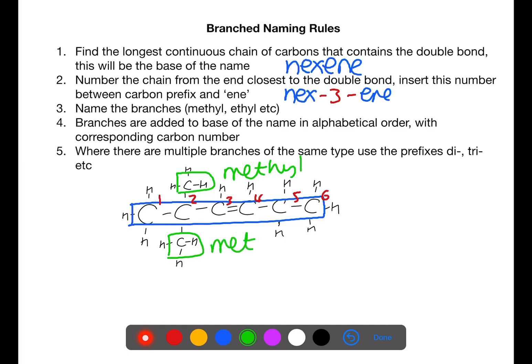In this case we have two methyl branches both on carbon two so the full name is 2,2-dimethyl-hex-3-ene.